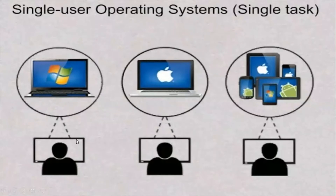We can see in this diagram a person working on a desktop IBM compatible PC using Windows, another using Apple Macintosh operating system compatible for Apple computers, and another user using Android or different operating systems on various gadgets. This diagram explains about the single user operating system.